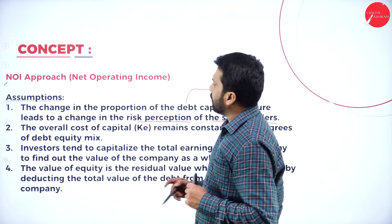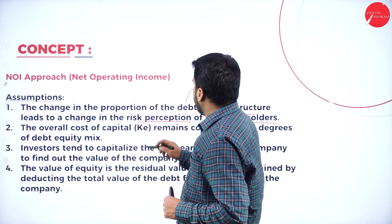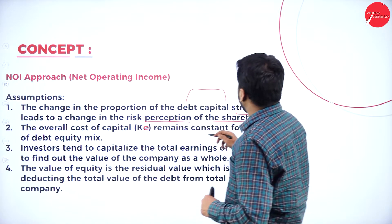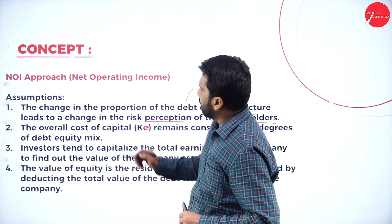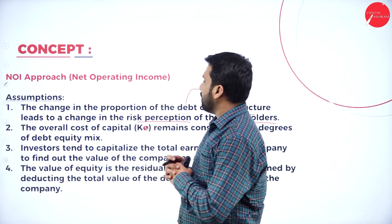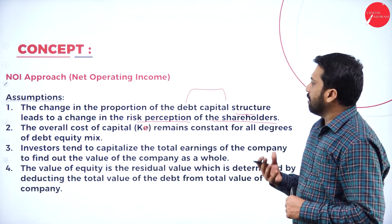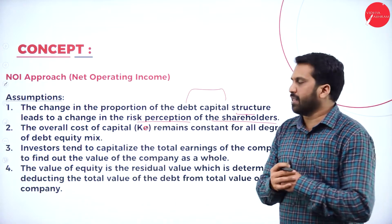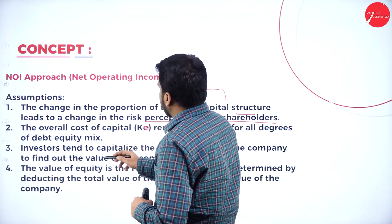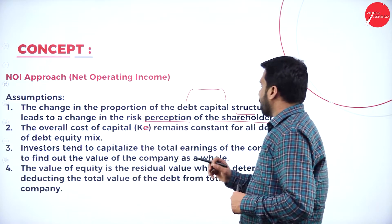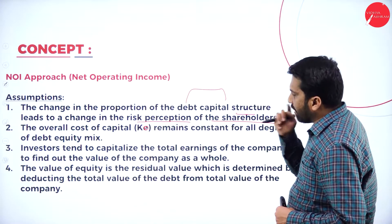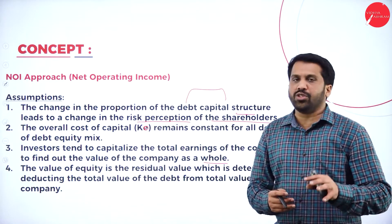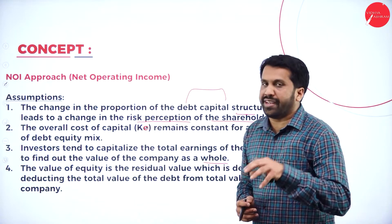The second assumption is: the overall cost of capital, KO, remains constant for all degrees of debt-equity mix. The third assumption is: investors tend to capitalize the total earnings of the company to find out the value of the company as a whole. These are the points — just remember them, don't go too in depth.